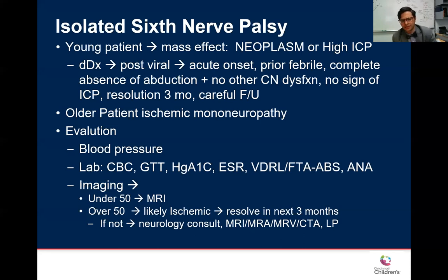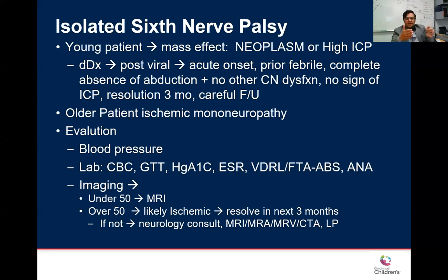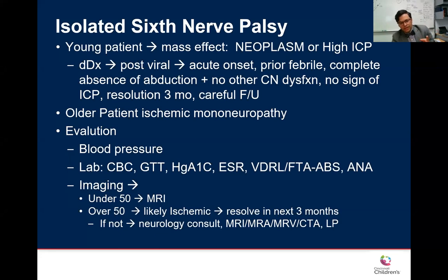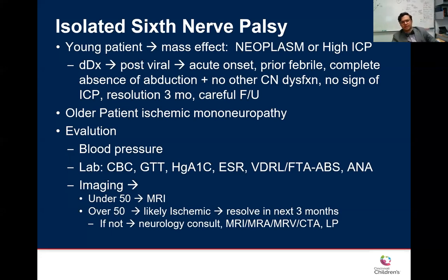A key clinical point: patients with sixth nerve palsy may report intermittent horizontal double vision, because at near they converge their eyes and appear fine to themselves. But at distance they can't bring the eye out due to the weak lateral rectus, so double vision is worse at distance and may be asymptomatic at near. That goes back to the directionality question. In older patients, the most common reason is ischemic mononeuropathy. Check blood pressure and glycemic control.